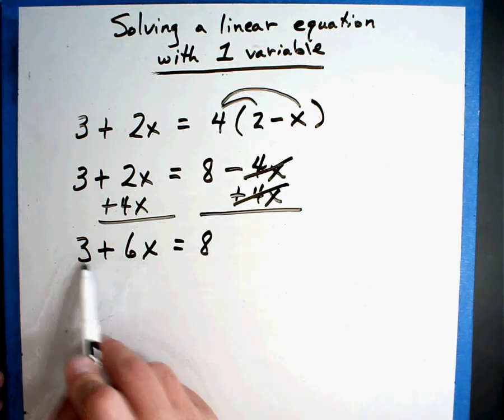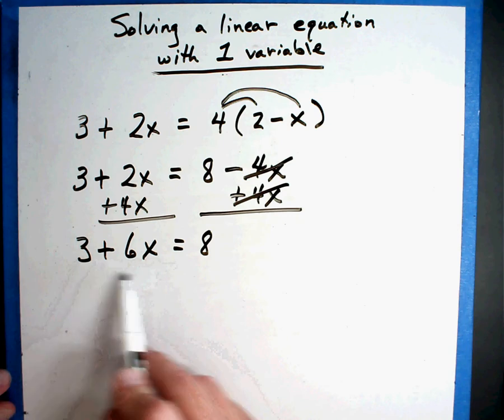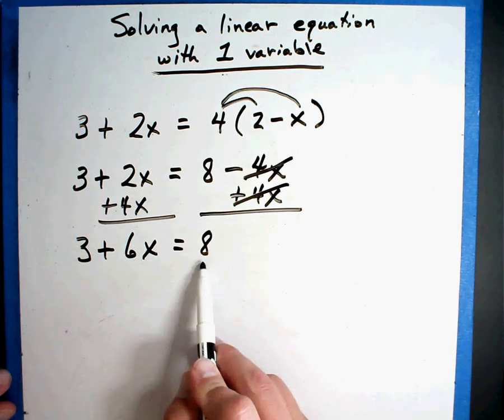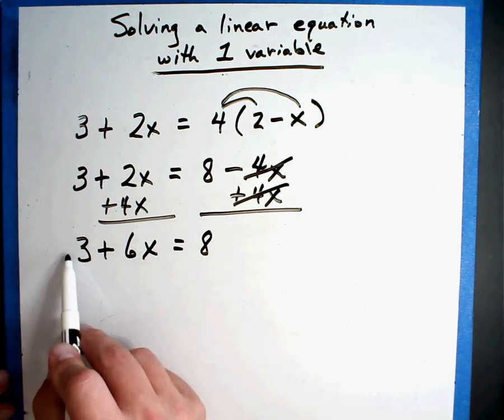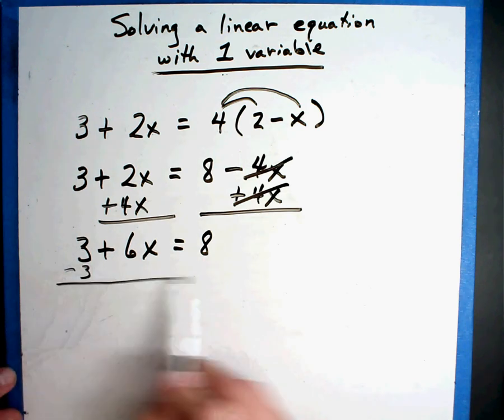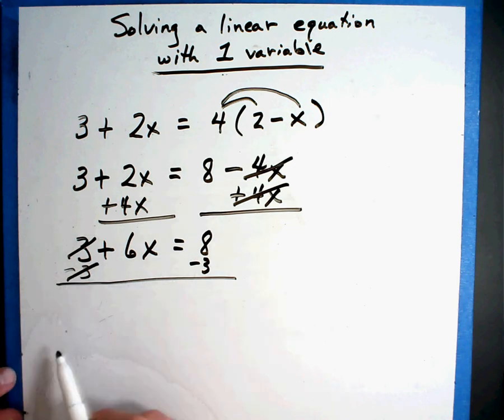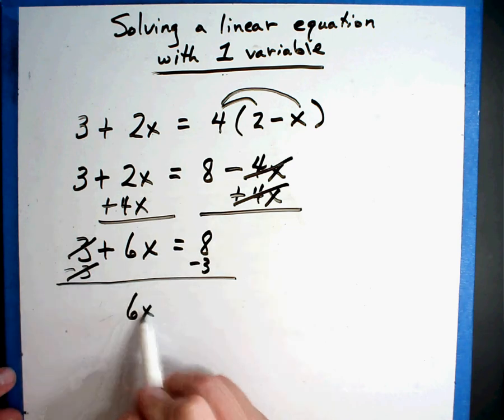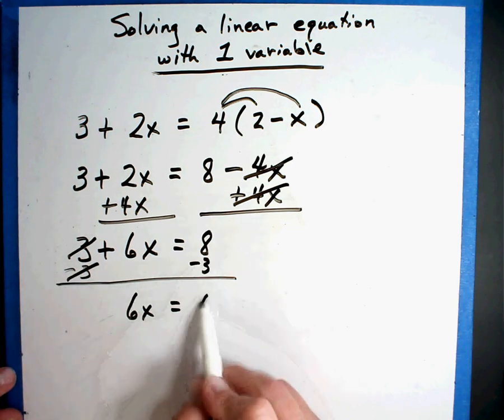Letters on the left, got it. Numbers on the right. So I have to move this over here to this side. And to do that it's a positive right now, so I have to subtract 3. So I have to do that on both sides. 3 minus 3 is gone. So it's 6X equals 8 minus 3 is 5.